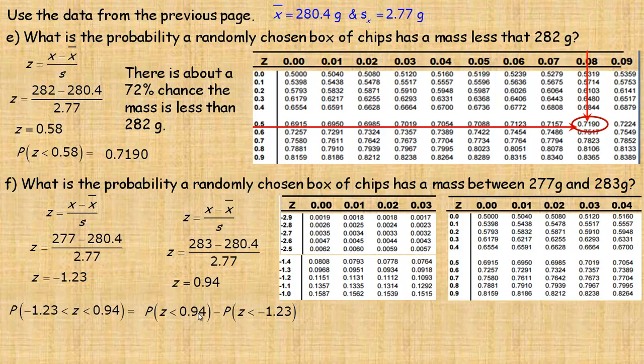So when we look this up in the table, this is the probability that a z-score is less than 0.94, and this is the probability that it's less than -1.23. Because we want what's between, we subtract those.